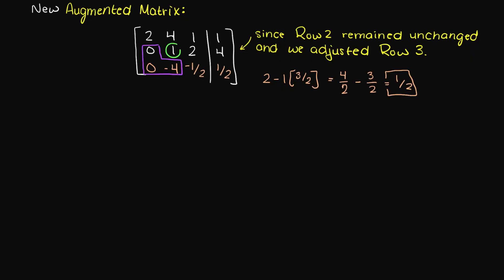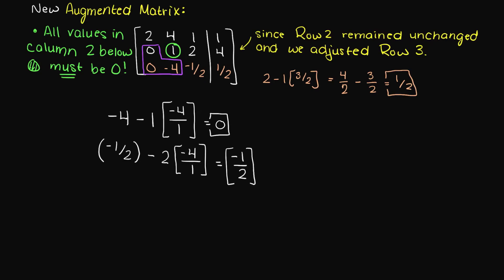Let's reshow our purple area of values that we need to turn to zero and move to column two. We use the element in row two column two and repeat our process of scaling and subtracting to get zeros.